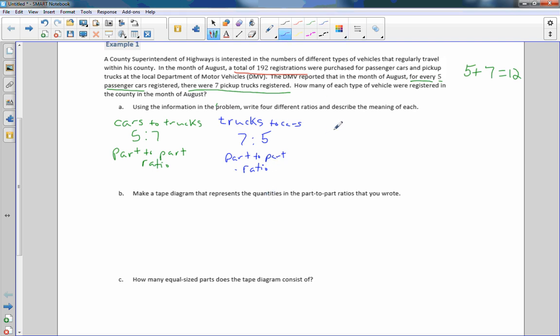Then I could do cars to total vehicles. And there are five cars to the total, which is 12. And that is a part to whole ratio. And then finally, one more. Cars to total. Now let's do trucks to total. So it would be trucks to total vehicles. And that would be seven to 12. And that is a part to whole ratio.